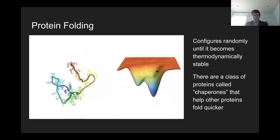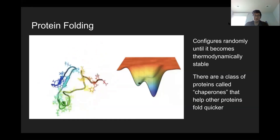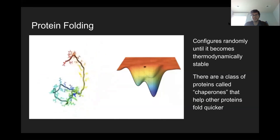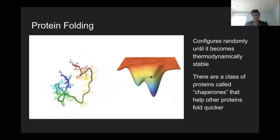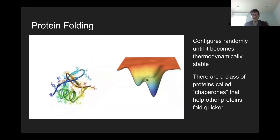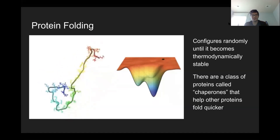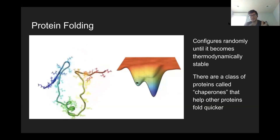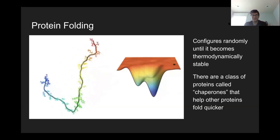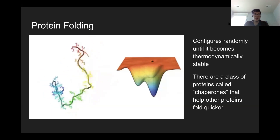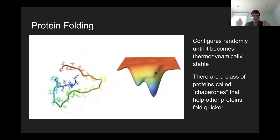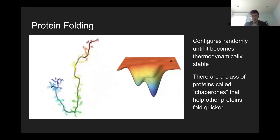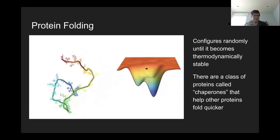There's a class of proteins called chaperones that actually help proteins fold. Protein folding doesn't necessarily happen immediately — it can take place while the primary structure is being built by the ribosome, or inside a separate chaperone environment. As that long primary sequence is assembled, the protein begins to fold, trying to find its lowest energy state where it's fully folded into the right shape.